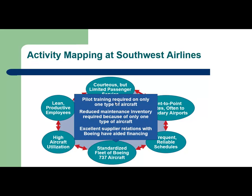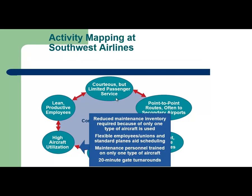Having a standard fleet of Boeing 737 aircraft reduced pilot required training to one type of aircraft, and also reduced the maintenance inventory and created an excellent relationship with the supplier. High aircraft utilization reduced gate turnarounds to 20 minutes, created a flexible schedule, and decreased the time required to maintain an aircraft.